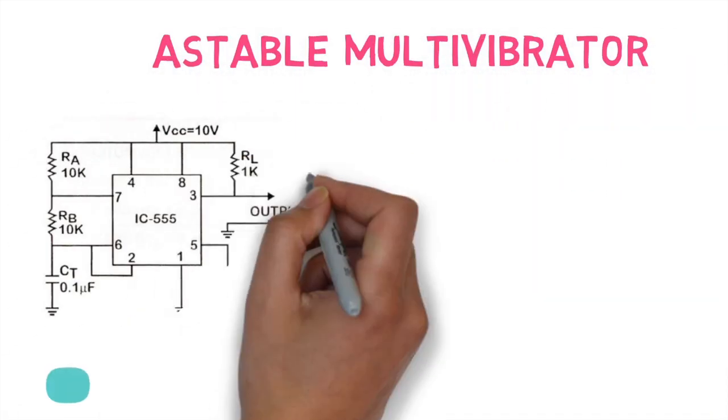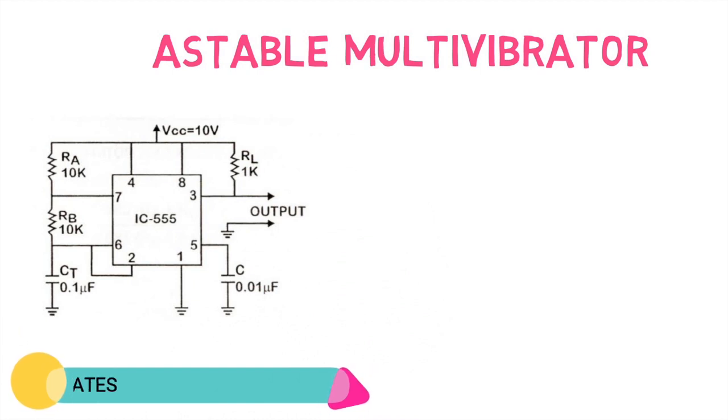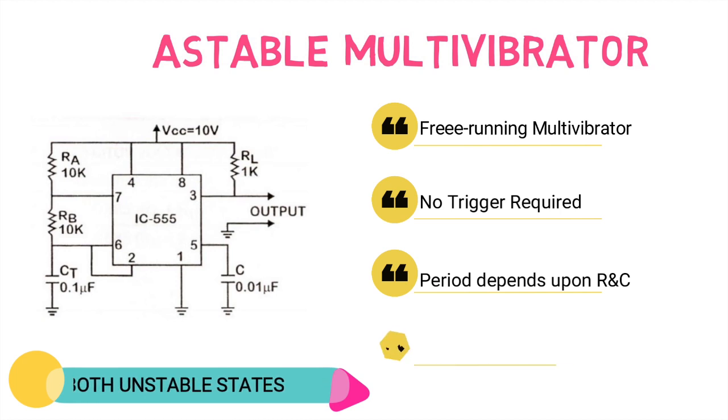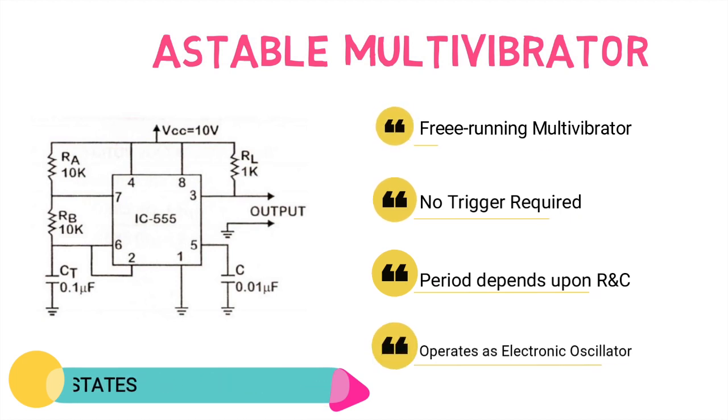As the name suggests, A-stable multivibrator circuit is where both of its states are unstable. A-stable multivibrators are also known as free running multivibrator. They do not need trigger pulse for external to change the output. The period for low and high can be calculated based on resistor and capacitor value that is connected at outside the timer. It also operates as an electronic oscillator.